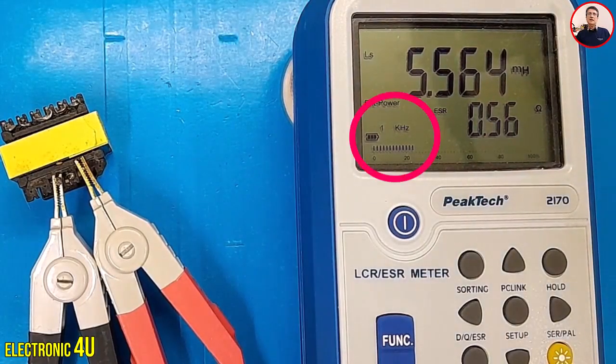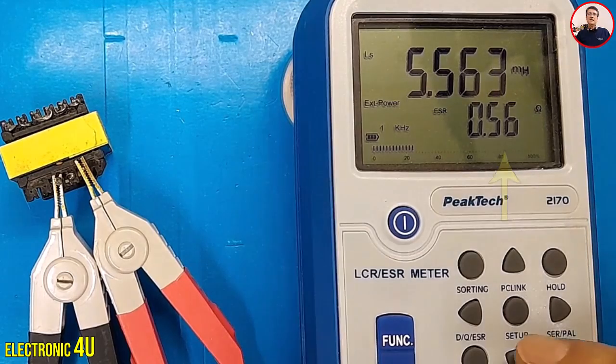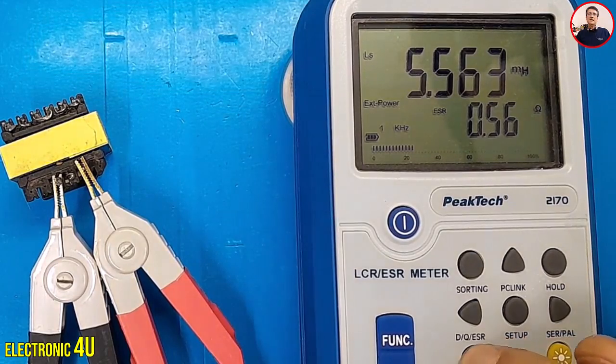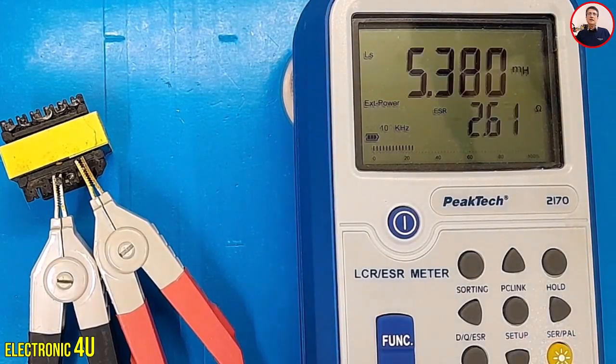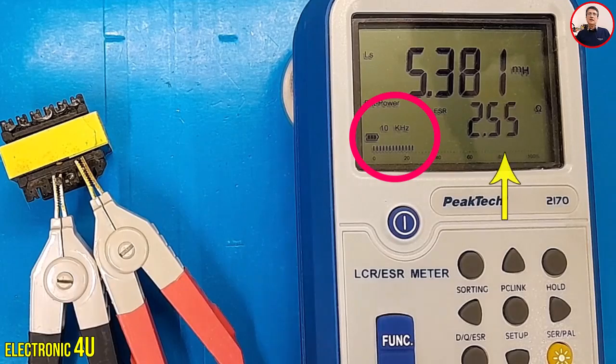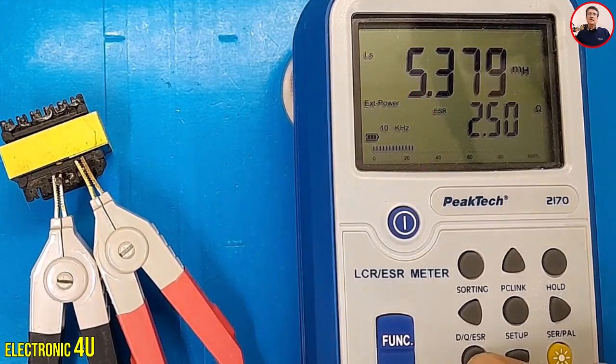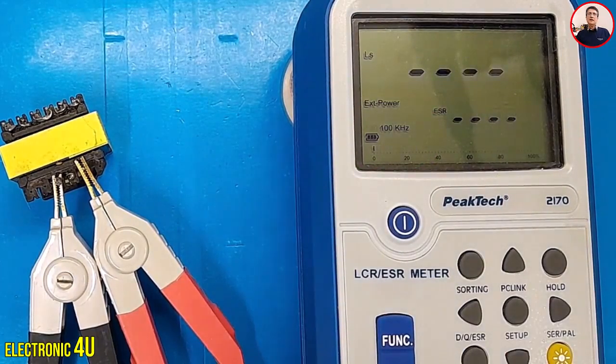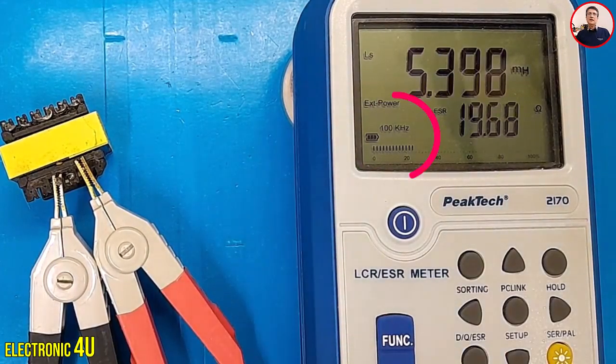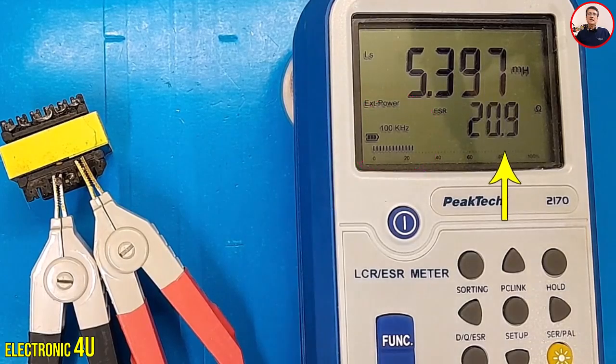At a frequency of 1 kHz, we have a resistance of 0.52 ohm in the inductor. I press the frequency button. At the frequency of 10 kHz, we have a resistance of about 2.53 ohm. At a frequency of 100 kHz, we have a resistance of 0.2 ohm.